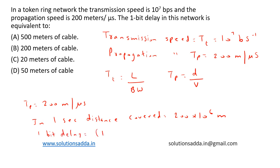One bit delay is equal to 1 upon bandwidth into velocity, which is equal to 1 by 10 to the power of 7 into 200 into 10 to the power of 6, which is equal to 20 meters.